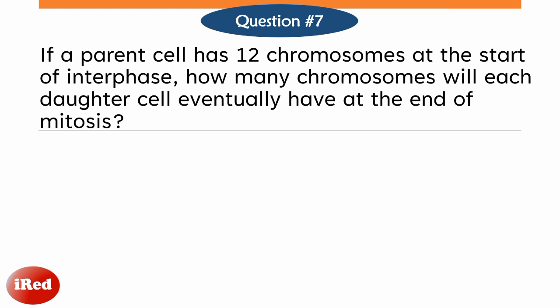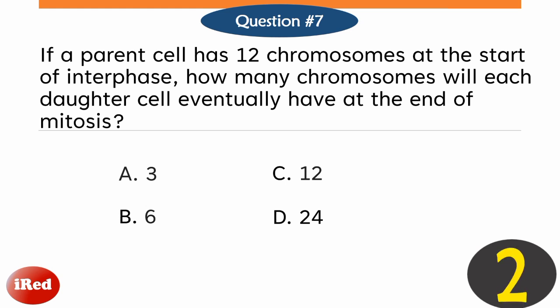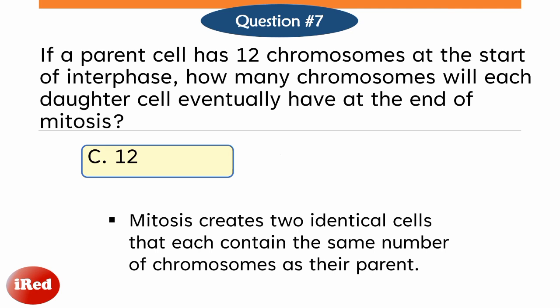If a parent cell has 12 chromosomes at the start of interphase, how many chromosomes will each daughter cell eventually have at the end of mitosis? Letter A, three; letter B, six; letter C, 12; or letter D, 24? The correct answer is letter C, 12. Mitosis creates two identical cells that each contain the same number of chromosomes as the parent.